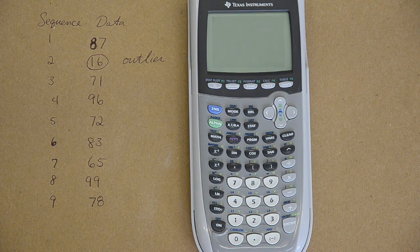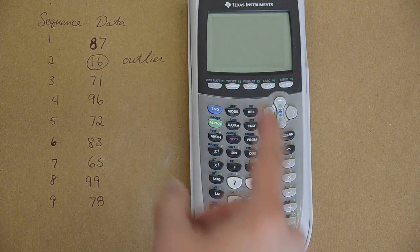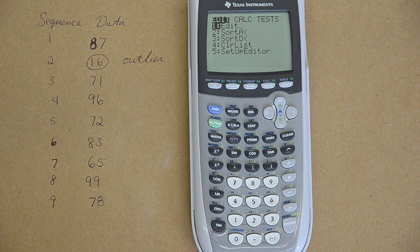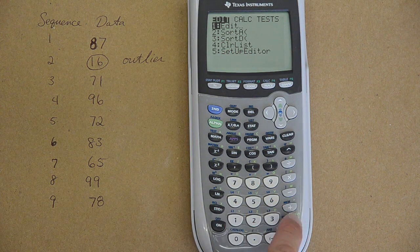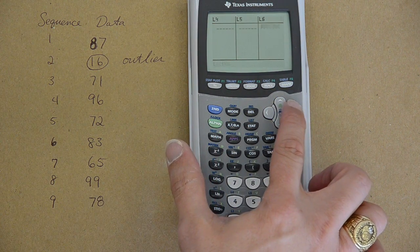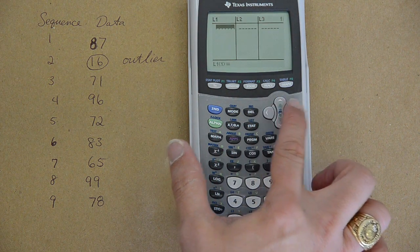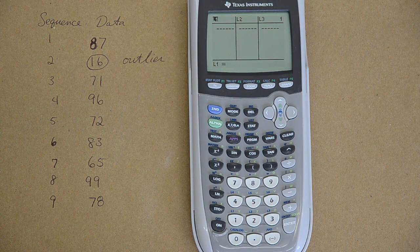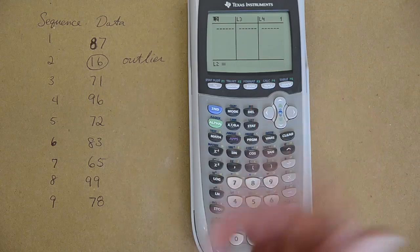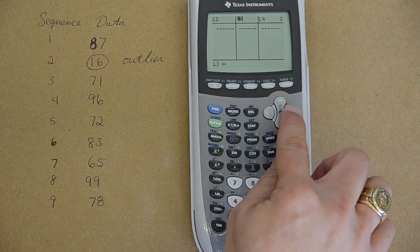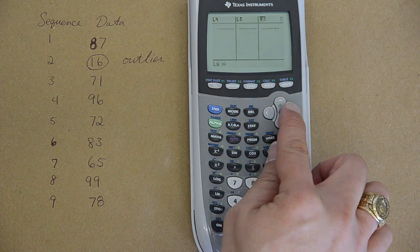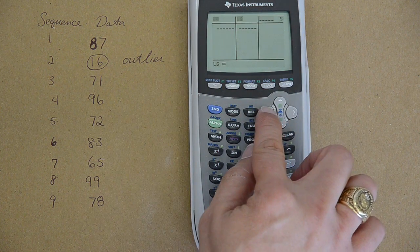I want to put this data into the calculator. I'm going to turn it on, hit the stat button, and hit edit to start putting in some numbers. Now your calculator should have six lists in it. If you should accidentally delete a list by going to L1 and hitting delete, now I only have five lists because L1 is gone. How do you get that back?